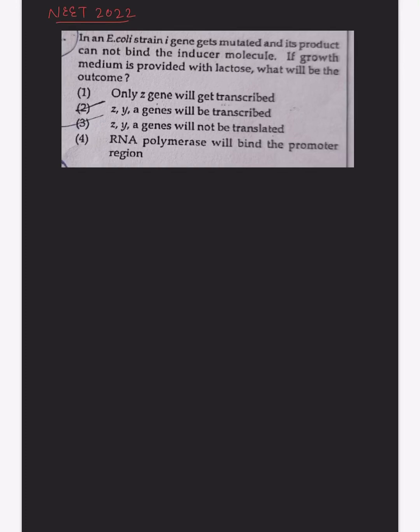Hello everyone, welcome to this channel Bioz. Today we are going to take up this question that came in the NEET 2022 exam. The question says that in an E. coli strain, the i gene gets mutated and its product cannot bind the inducer molecule. If the growth medium is provided with lactose, what will be the outcome? The inducer molecule here is lactose itself, and there is a mutation in the i gene.